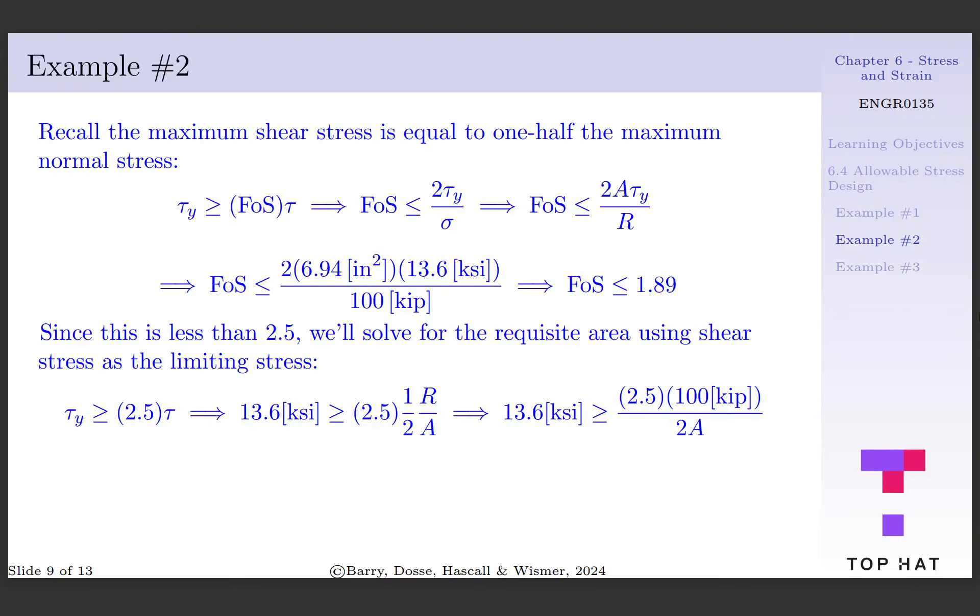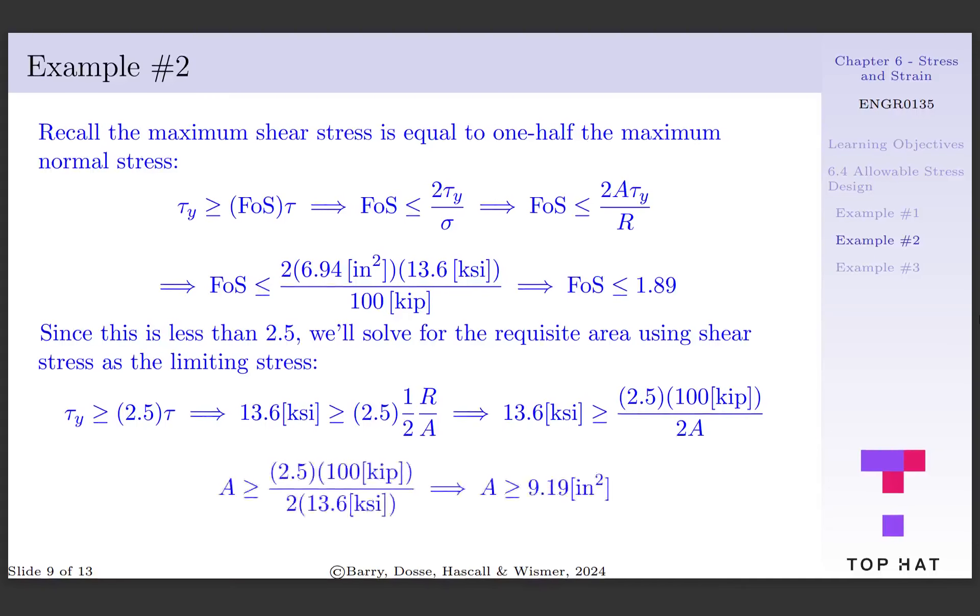Substituting in our known values gives us 13.6 ksi greater than or equal to 2.5 times 100 kip per 2A. Solving our equation for A gives us the minimum cross-sectional area of 9.19 square inches.